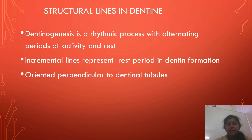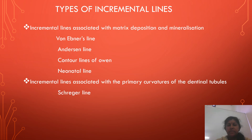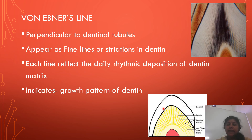Coming to the structural lines in dentine. Dentinogenesis is a rhythmic process with alternating periods of activity and rest. Incremental lines represent rest periods in dentine formation and are oriented perpendicular to the dentinal tubules. There are different types of incremental lines: those associated with matrix deposition and mineralization are called von Ebner's lines, Andresen lines, contour lines of Owen, and neonatal line. Incremental lines associated with the primary curvature of dentinal tubules are called Schreger lines. Von Ebner's lines are perpendicular to the dentinal tubules and appear as fine lines or striations in dentine. Each line reflects the daily rhythmic deposition of dentine matrix, indicating the growth pattern of dentine.